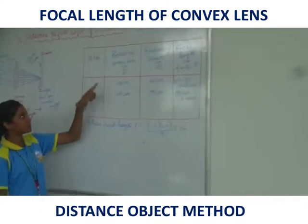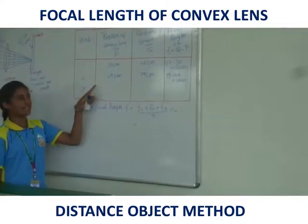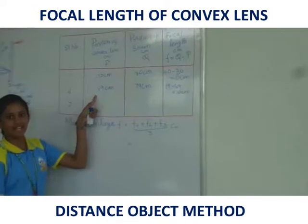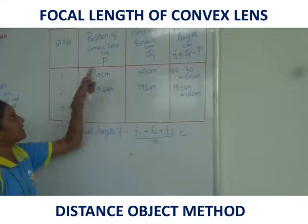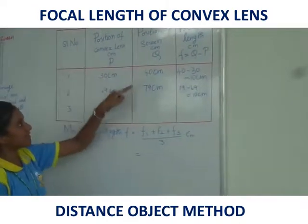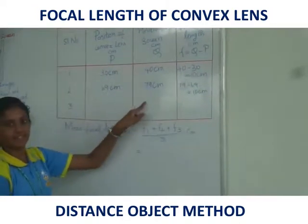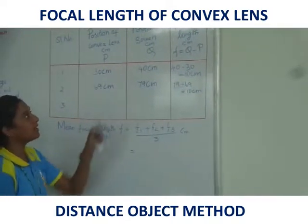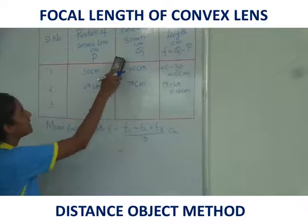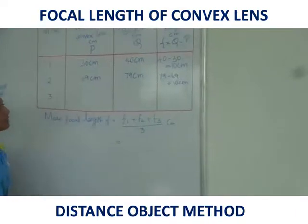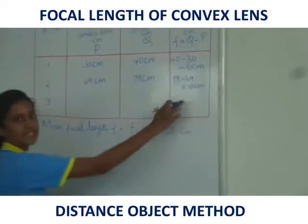In the second reading, the position of the convex lens is 69 cm and the position of the screen is 79 cm. The difference between the screen and the convex lens is 10 cm.